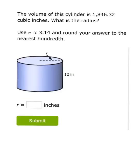This time we have to work backwards. We know the volume of the cylinder is 1,846.32, and we need to figure out what the radius is. I know the formula is pi times radius squared times the height, and let's fill in what we do know.